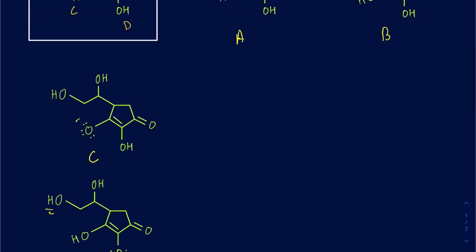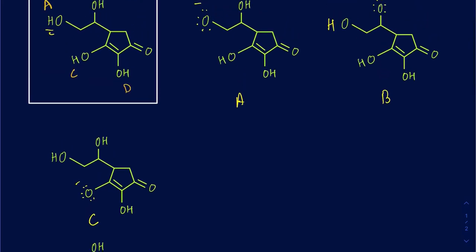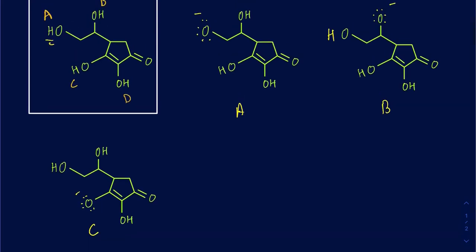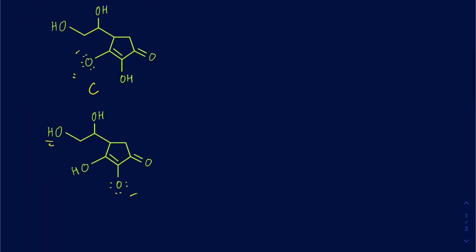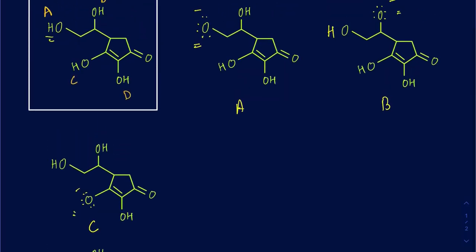Now, going back to figure out which conjugate base is most stable: the first thing you want to look for is the atom — which particular atom is getting the negative charge. It turns out in every single structure after losing the proton, it's actually going to be your oxygen that gets the negative charge in all four cases — A, B, C, and D. So the atom effect is not going to help, and we move on to the next effect.